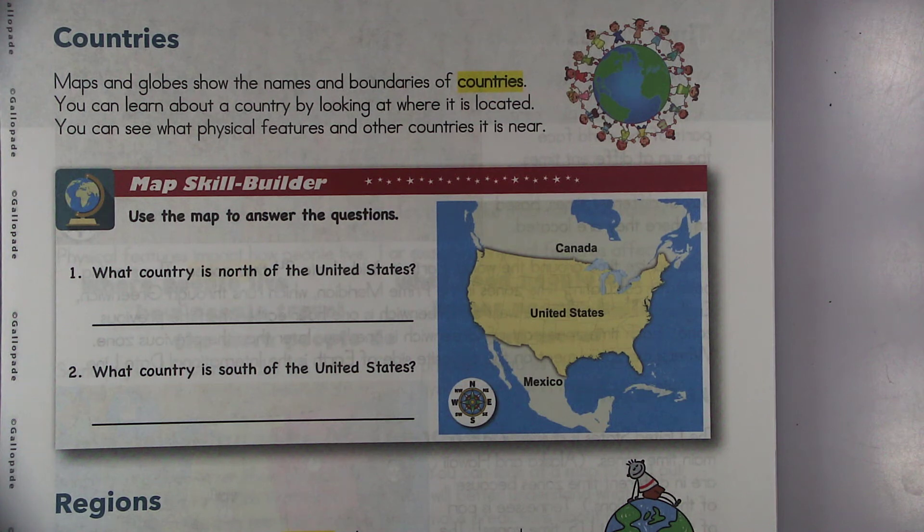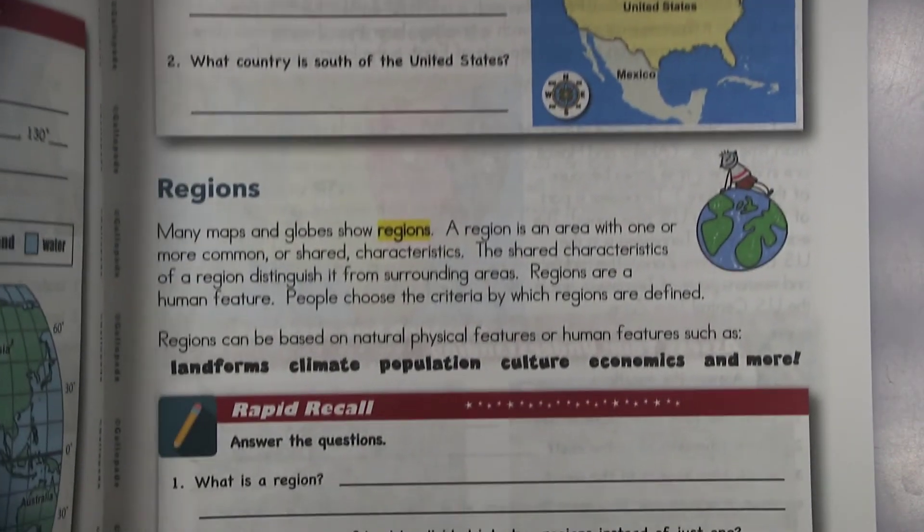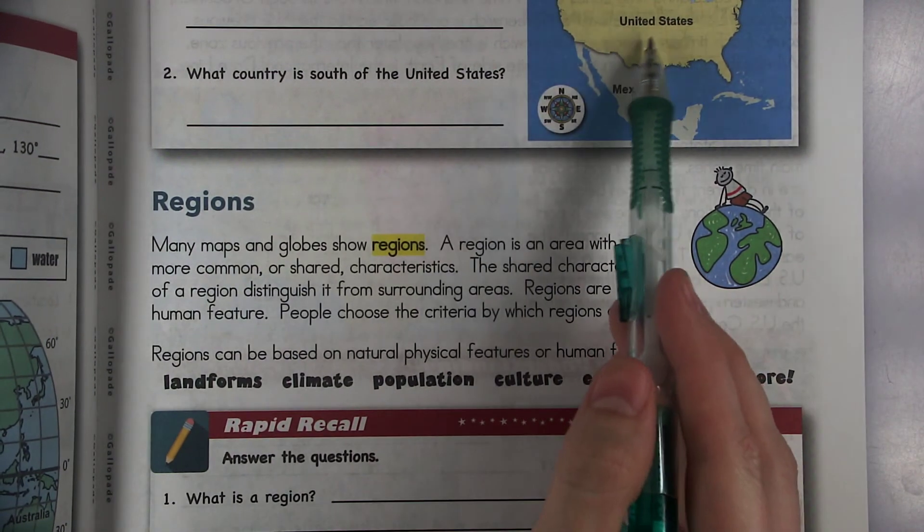Maps and globes show the names and boundaries of countries. You can learn about a country by looking at where it is located. You can see what physical features and other countries it is near. So what country is north of the United States and what country is south of the United States? Go ahead and answer that. And this is the country you live in, the United States.